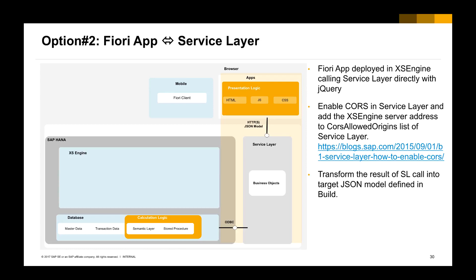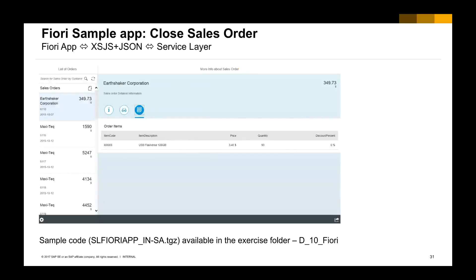When calling the Service Layer, it returns JSON data to the Fiori app, and the Fiori app binds that JSON data model with the Fiori user controls. Here is the sample Fiori app, which supports checking sales orders, auto-opening sales orders, closing sales orders, and cancelling sales orders. Let's have a look at the demo.